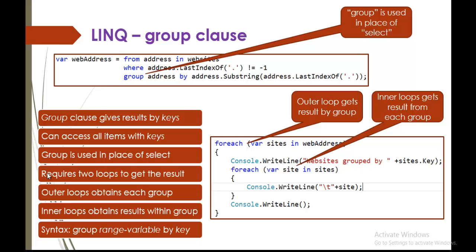It requires two loops to get the result — an outer loop and an inner loop. The outer loop obtains each group, and the inner loop obtains the results within that group. For example, if you are having two groups like boys and girls, the outer loop gives you what types of groups are present in the school, like boys and girls. But the inner loop tells you the names of the boys or girls present in the group, or the age or other properties within that respective group.